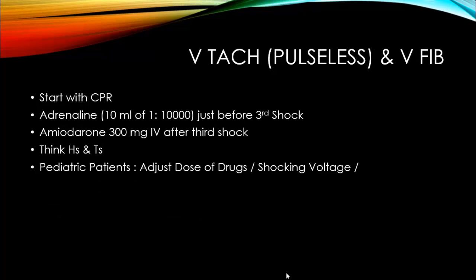For V-tach without pulse and V-fibrillation, you immediately start CPR, call for help, and call for early defibrillation. You can use two drugs here. First is adrenaline 1:10,000 — 10 ml of 1:10,000 just before the third shock. Amiodarone 300 mg IV after the third shock. Think of H's and T's: hypoxia, hypovolemia, hypo/hyperkalemia, H-ion acidosis, tamponade, tension pneumothorax, thrombosis (pulmonary and coronary), and toxins — calcium channel blockers, paracetamol overdose, TCA overdose, beta blocker overdose. In pediatric patients, we need to adjust the drugs, dosage and voltage.